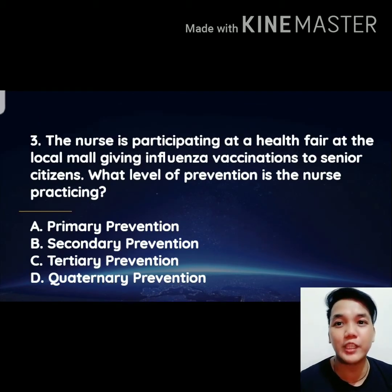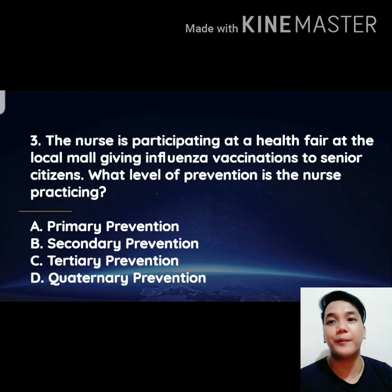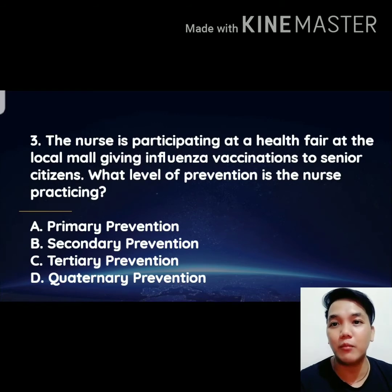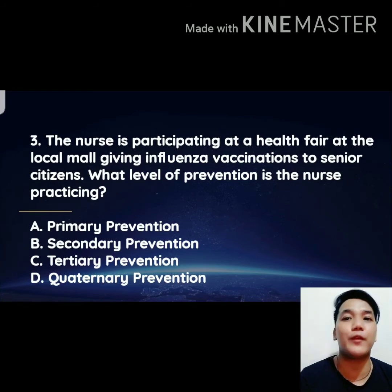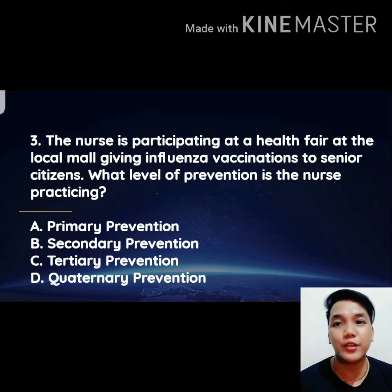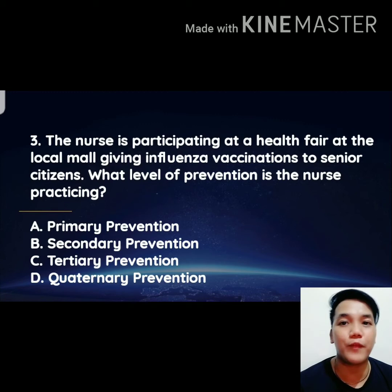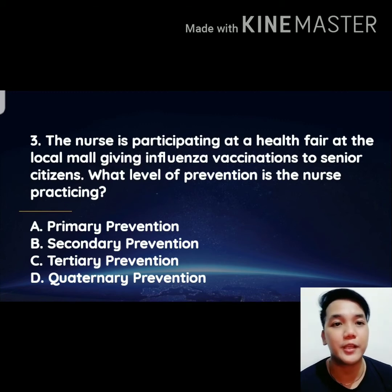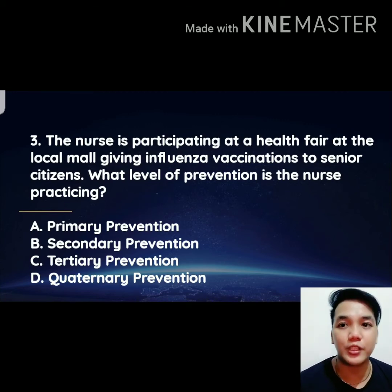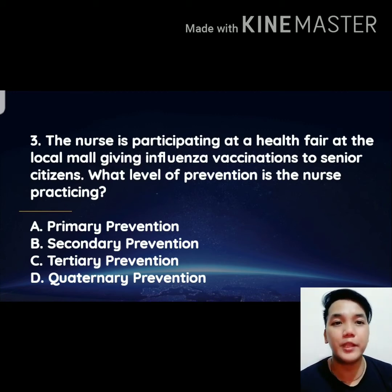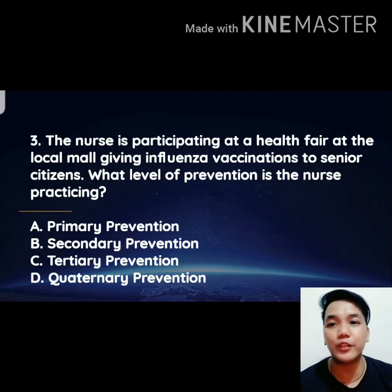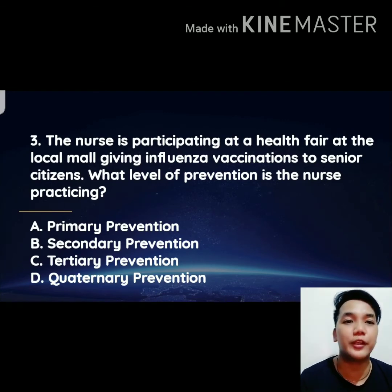Number three: the nurse is participating at a health fair at the local mall giving influenza vaccination to senior citizens. What level of prevention is the nurse practicing? A) primary prevention, B) secondary prevention, C) tertiary prevention.